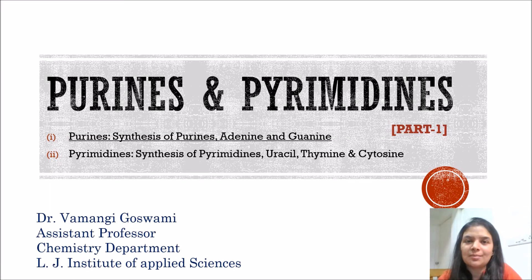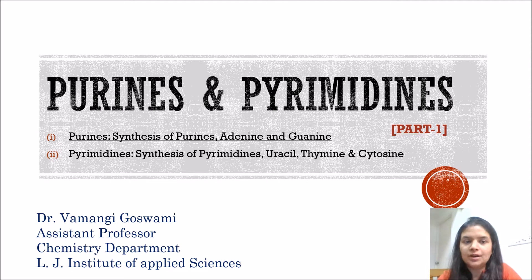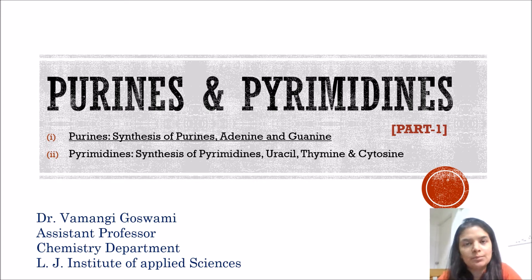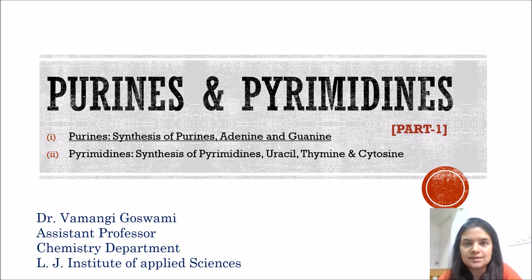Hello everyone, I am Dr. Vamangi Goswami. Today I would like to discuss about our new topic Purines and Pyrimidines. This topic comes under Gujarat University BSc Chemistry Semester 5 syllabus, paper number 301, unit number 4b. In this part of the video, we will only discuss about the synthesis of purines, adenine and guanine. So let us begin.